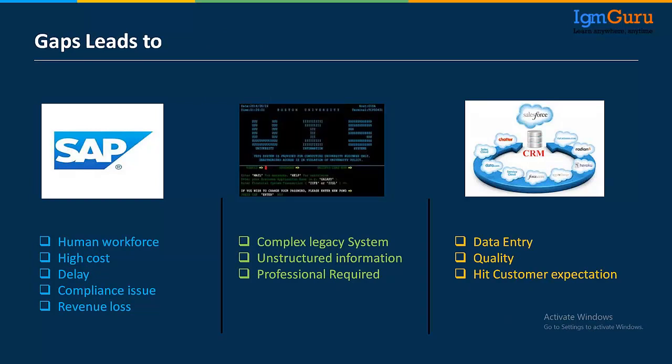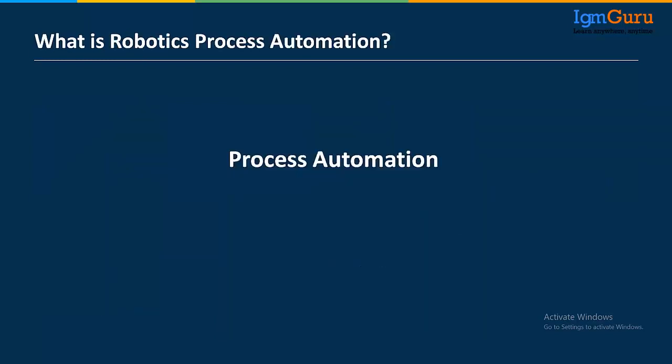What are the gaps in process automation? SAP has very high cost and compliance issues, and requires more human workforce. Mainframe is a complex legacy system that requires professionals who know it thoroughly. In CRM, there's a lot of data entry, so quality may be impacted. These are all process automation tools, and these gaps led to the emergence of RPA.